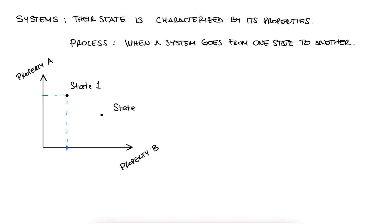We could draw a line that shows how the system went from state one to state two. This line, or curve in general, would be the process itself.